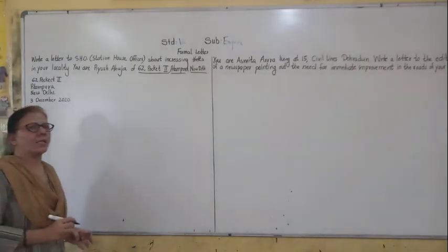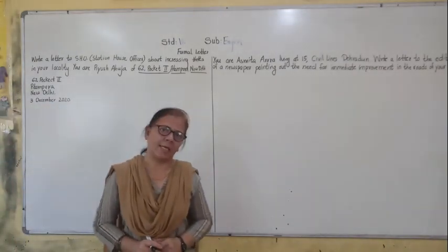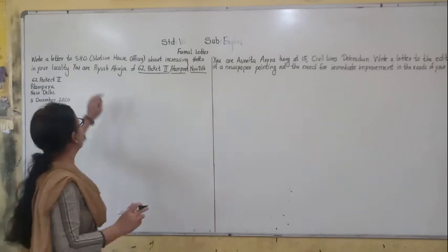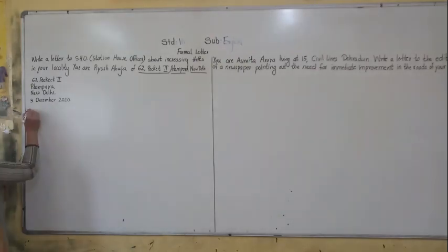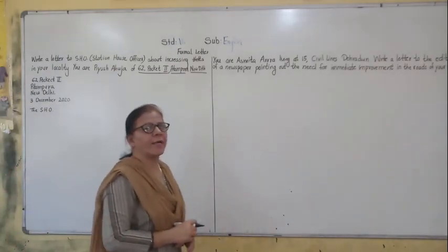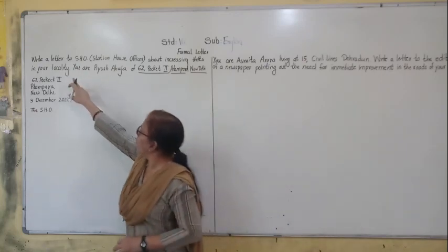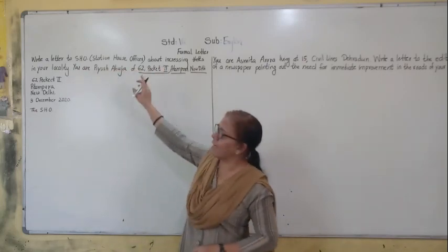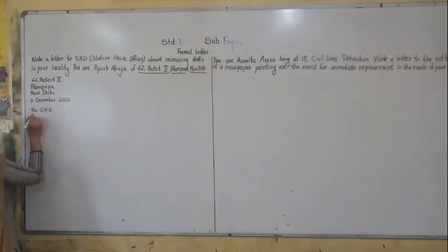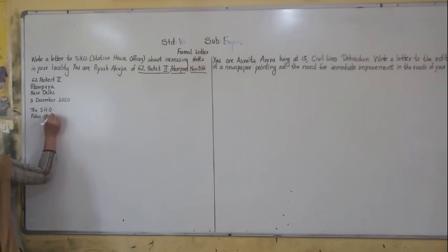After the date comes the receiver's address — the designation and address. We have to write the letter to the SHO, so: The SHO, Police Station, Pitampura. Since your locality is Pitampura, that is where you address it.